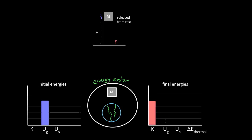You might wonder why there wasn't any gravitational potential energy at the end. I was assuming that the ground was the H equals zero line. We know gravitational potential energy is MGH, so where H equals zero, the potential energy is zero. When this mass gets down to the final point, it no longer has any potential energy. Since it has no potential energy, all of the gravitational potential energy it had initially has to turn into kinetic energy in order for the energy of our system to be conserved.